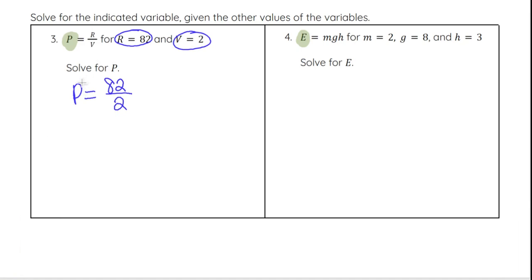Because the variable P is already by itself and we're solving for that, the concept here when you're solving an equation is to get that variable by itself. It's already there. So we can do 82 divided by 2 to get the value of P, which is 41.